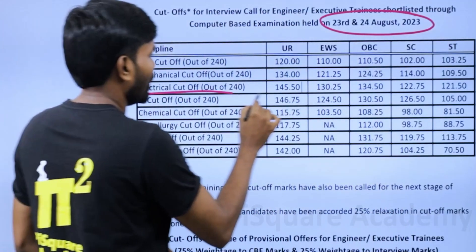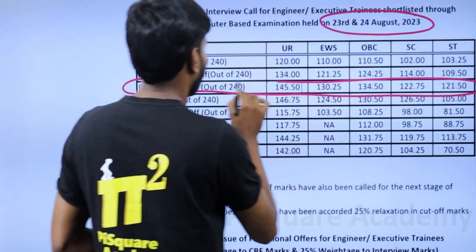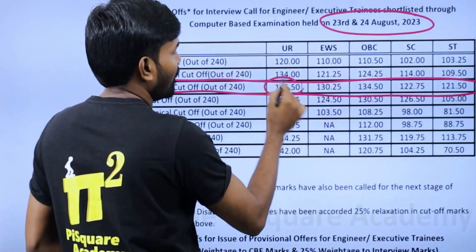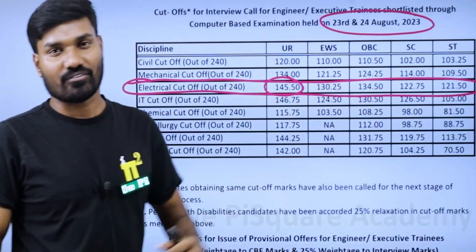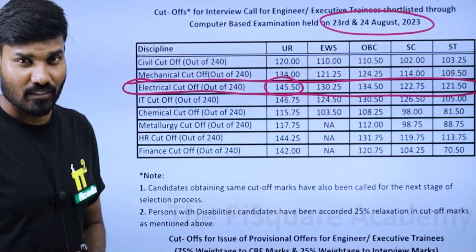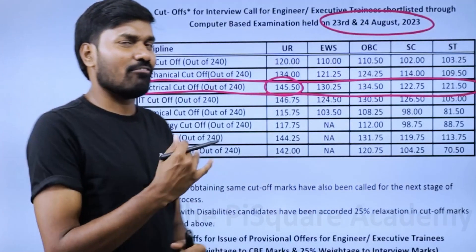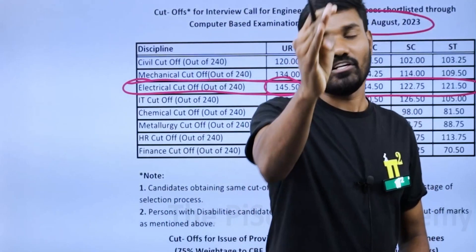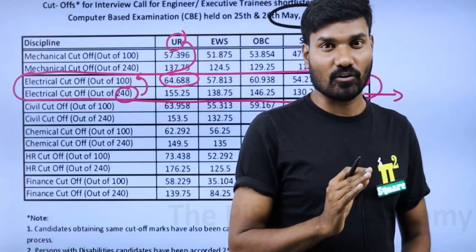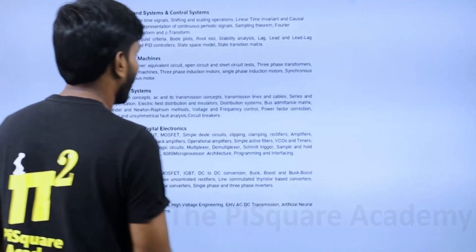The same trend is true even for 2023 also, 2023 exam also. Same trend. Electrical engineering, 240 marks. Out of 240 marks, you have to score 145 marks. Same trend. So what do you understand from this? You should aim to get 170 marks. For sure you will get a call.